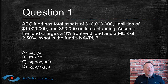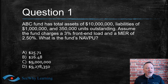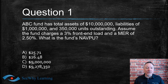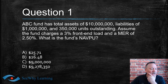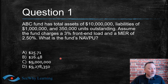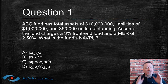ABC fund has total assets of $10 million, liabilities of $1 million, and 350,000 units outstanding. Assume the fund charges a 3% front-end load and an MER of 2.5%. What is the fund's NAVPU? The four answer choices are: A) $25.71, B) $26.48, C) $9 million, D) $9,278,350.